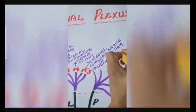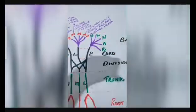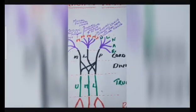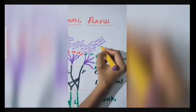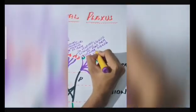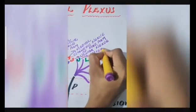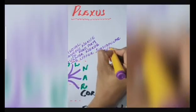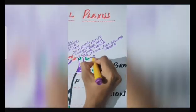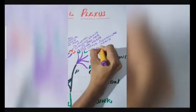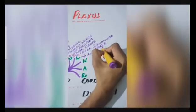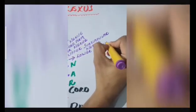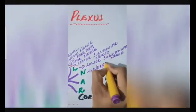Now let's look at the branches of the posterior cord. There is also 5 branches. They can be remembered by a word ulnar. U stands for the upper subscapular nerve. L stands for the lower subscapular nerve. N stands for the nerve to latissimus dorsi. A stands for the axillary nerve. And finally, R stands for the radial nerve.